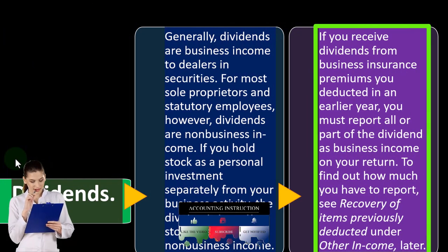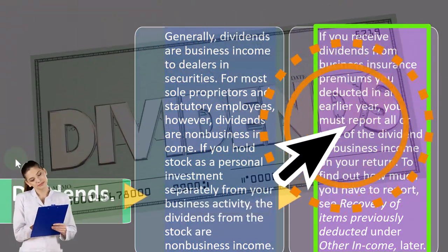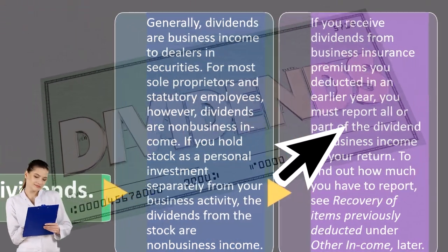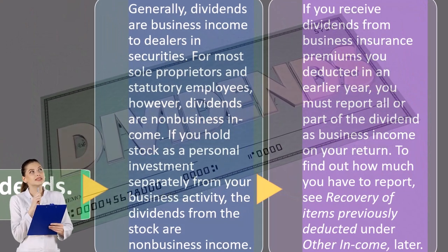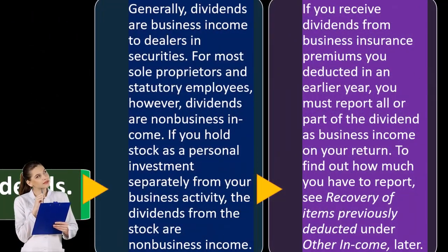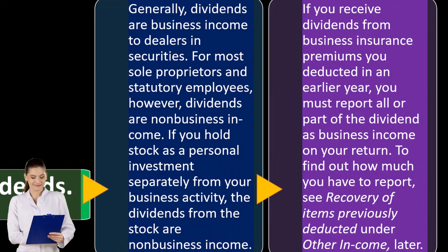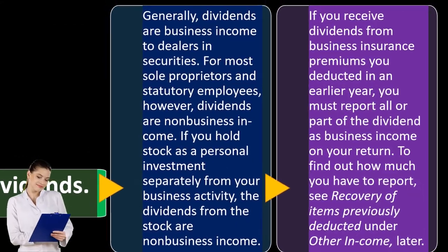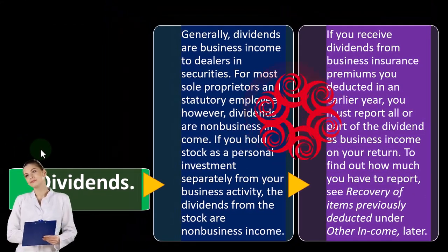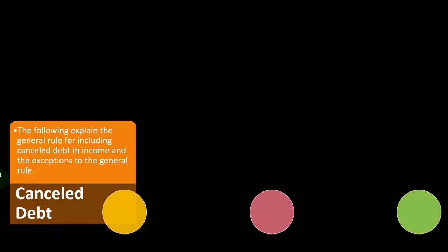If you receive dividends from business insurance premiums you deducted in an earlier year, you must report all or part of the dividend as business income on your return. To find out how much to report, see the section on recovery of items previously deducted under other income.